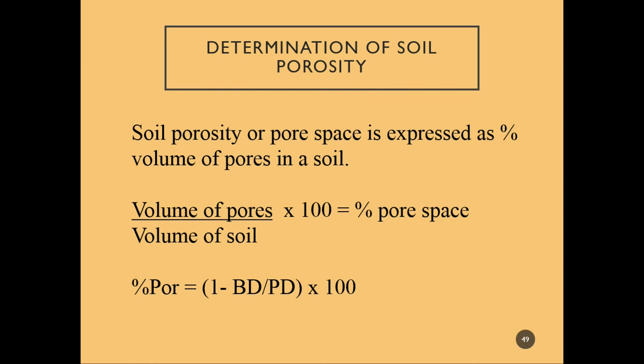Determination of soil porosity: it is expressed as percent of volume of pores in the soil — volume of pores divided by volume of soil, times 100, equals our pore space. In equation form: percent pore space equals 1 minus bulk density divided by particle density, times 100.